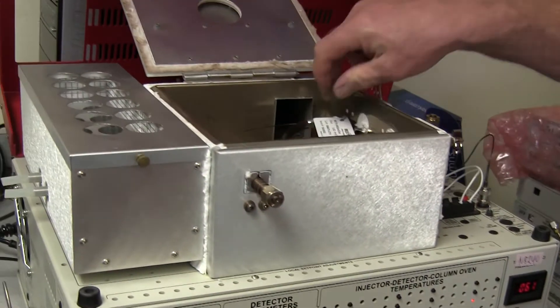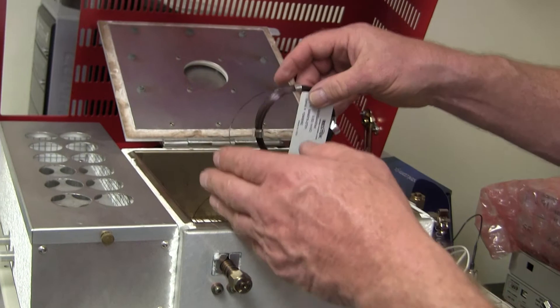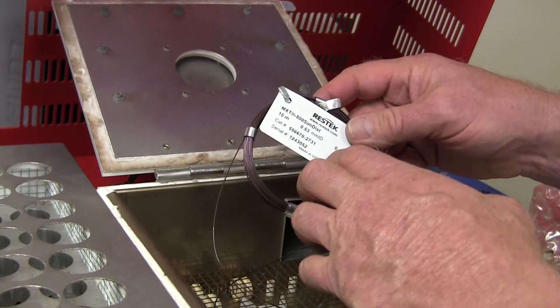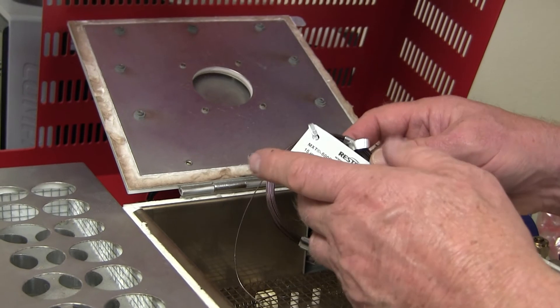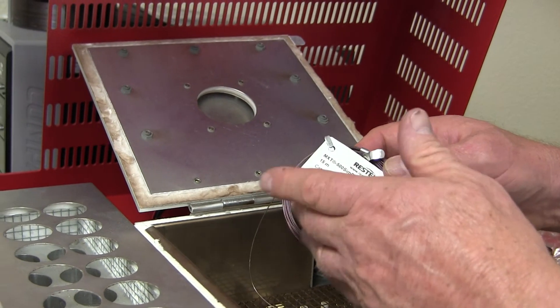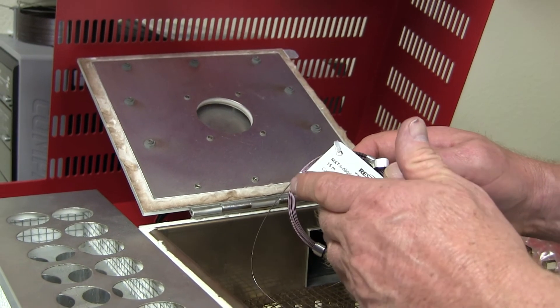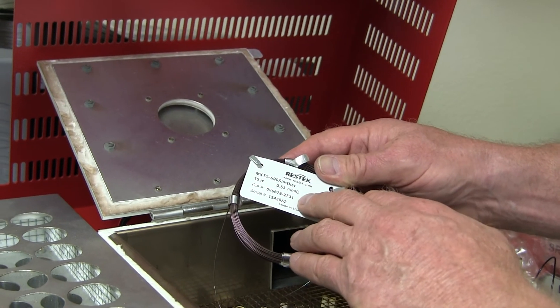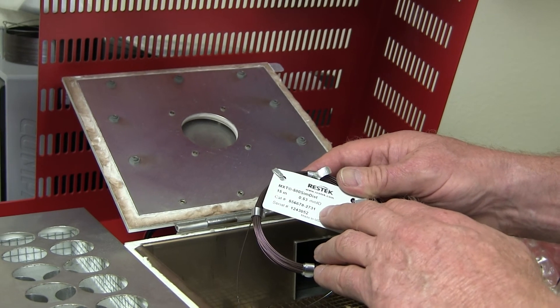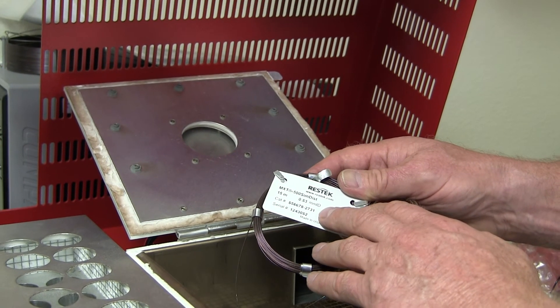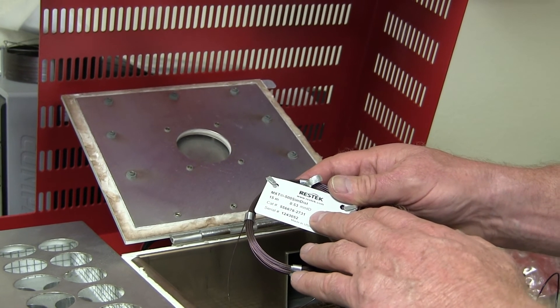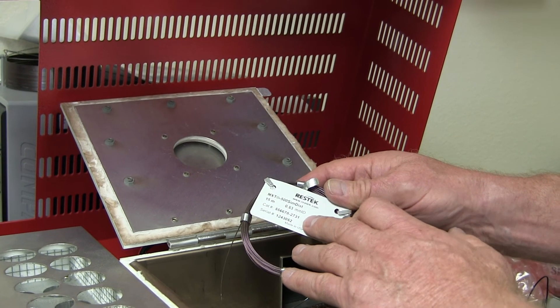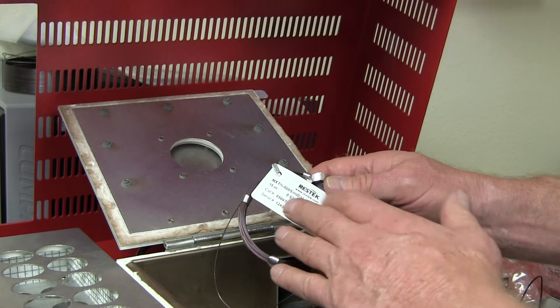To bake out the column, as distinct from baking out the polishing filter, you're just going to set the column oven temperature somewhere close to the maximum temperature of the column, but not at the maximum temperature of the column. If this one, for instance, was set to 350 degrees, you wouldn't want to bake a column out that only had a 300 degree maximum temperature limit at 350 degrees because that would probably damage the column.